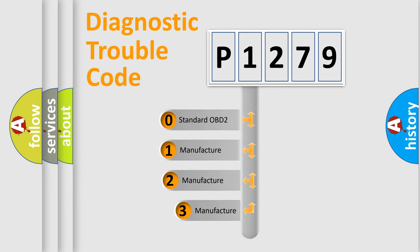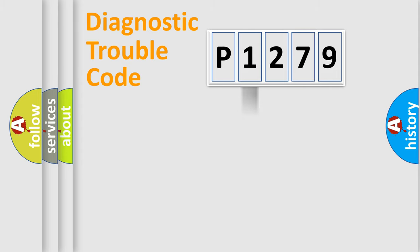If the second character is expressed as zero, it is a standardized error. In the case of numbers 1, 2, or 3, it is a more specific expression of the car-specific error.